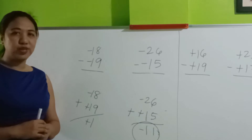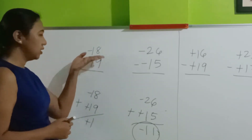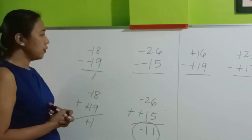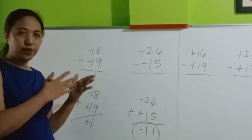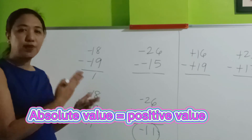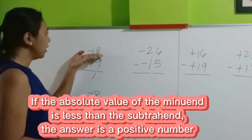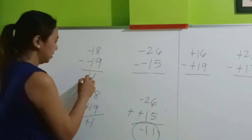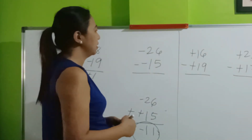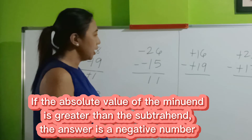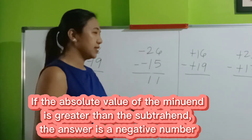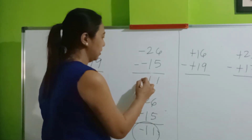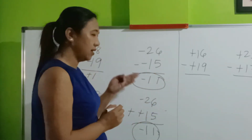Now let's go to the shortcut. If we are subtracting integers with the same sign, just subtract. If the absolute value of the minuend is less than the absolute value of the subtrahend, then the sign is positive. Now, if the absolute value of the minuend is greater than the absolute value of the subtrahend, the sign should be negative. So this is now negative.